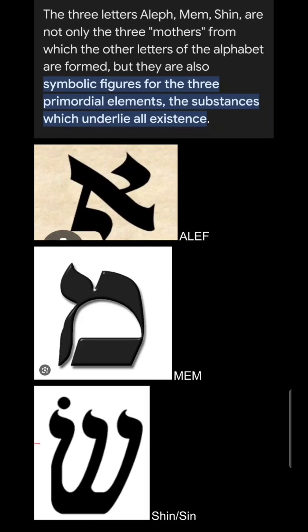Let me explain. The three letters — Aleph, Mem, and Shin — they're not only the three mothers from which the other letters of the alphabet are formed, but they're also symbolic figures for the three primordial elements, the substances which underlie all existence.